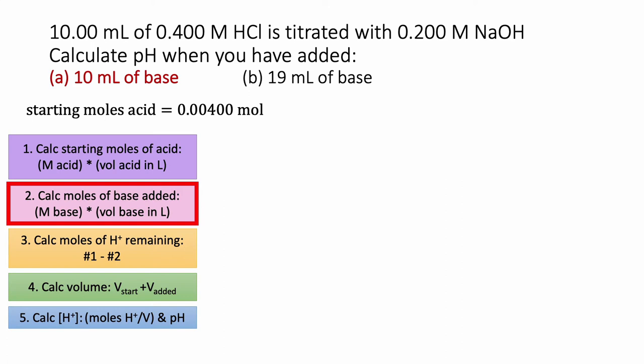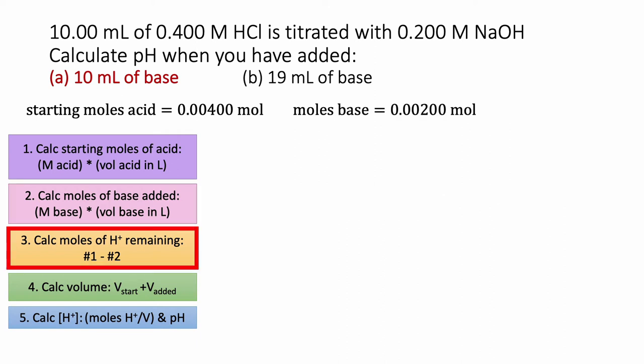Step two is to calculate the moles of base added — molarity times volume. The moles of base is 0.200 molar times the volume of base added, which at this point is 10 milliliters, or 0.010 liters. That gives us 2 millimoles, or 0.002 moles.